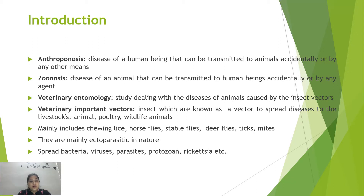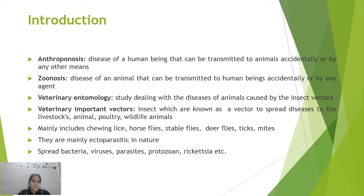The science that deals with the study of infectious diseases of animals caused by insect vectors is known as veterinary entomology. Veterinary important vectors are insects that spread disease by transferring various microorganisms like viruses, bacteria, and nematodes, causing sickness in livestock, domestic animals, pet animals, poultry, and wildlife. These mainly include chewing flies, horse flies, stable flies, deer flies, ticks, and mites — all ectoparasitic in nature.